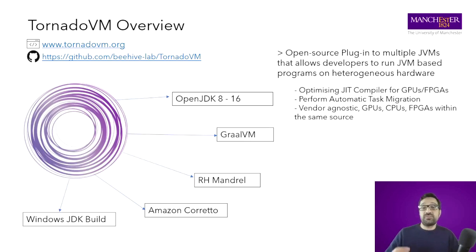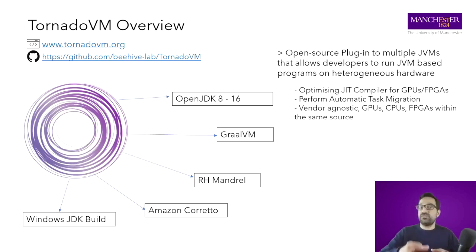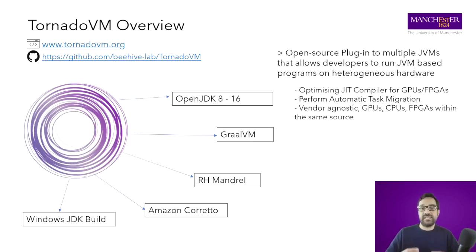TornadoVM can perform task migration between architectures and devices. For example, TornadoVM can run an application on a GPU for a while and later migrate execution — without restarting — to another GPU, FPGA, multi-core, and back and forth. TornadoVM's programming model is fully hardware-agnostic. The source code to be executed on heterogeneous hardware is the same whether running on GPUs, CPUs, or FPGAs. TornadoVM can run with multiple JDK vendors: OpenJDK, GraalVM, Red Hat Mandrel, Amazon Corretto, and Windows JDK.